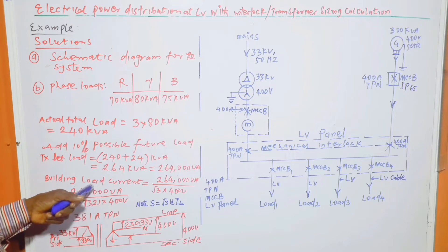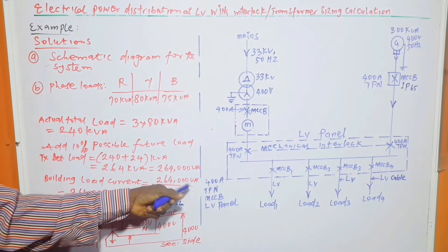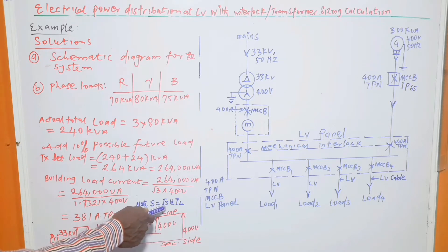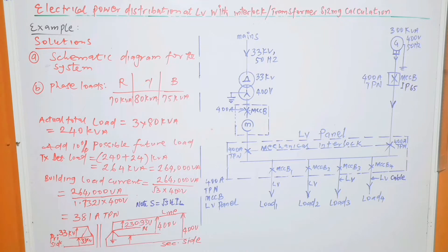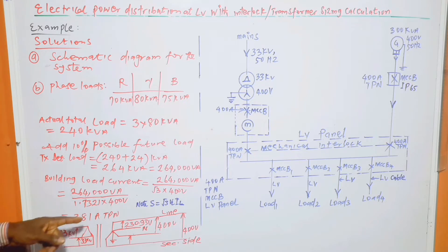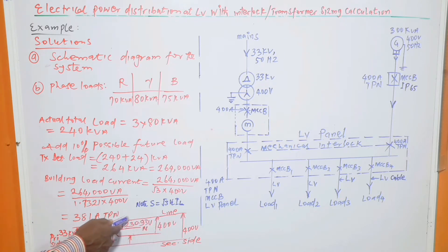Then we can move further to calculate the building load current, which is equal to 264,000 VA divided by root 3 times 400 volts. From this formula S is equal to root 3 times V line times I line, from which we can calculate the I line to be equal to 381 ampere triple phase with neutral. In this case, it doesn't mean that the neutral current is 381, we are just saying that we have 3 phases plus neutral. It is the line current, which is equal to the phase current in this situation, that is 381.